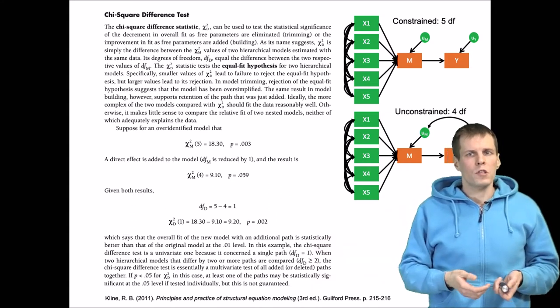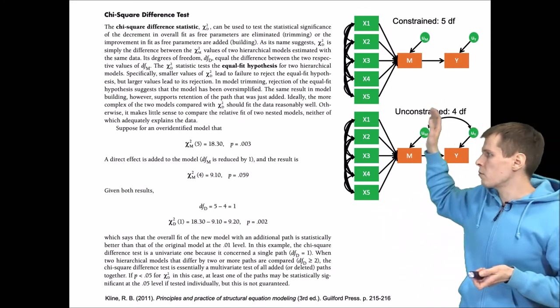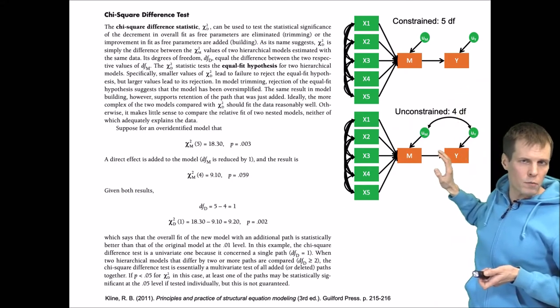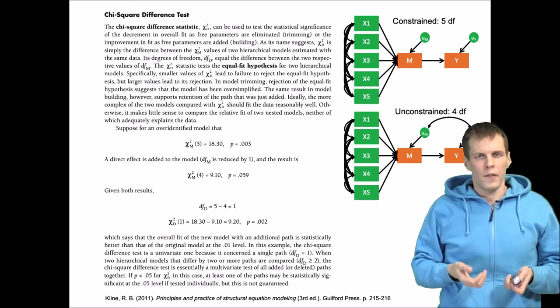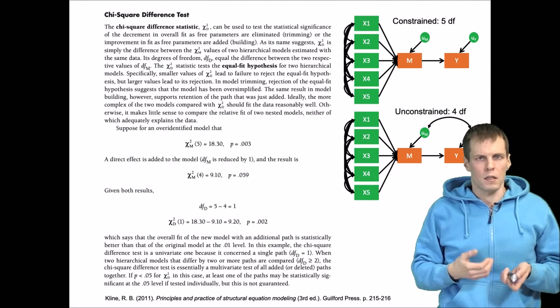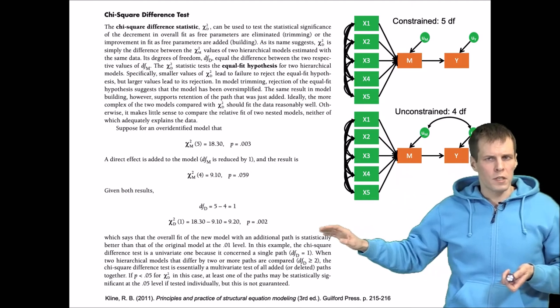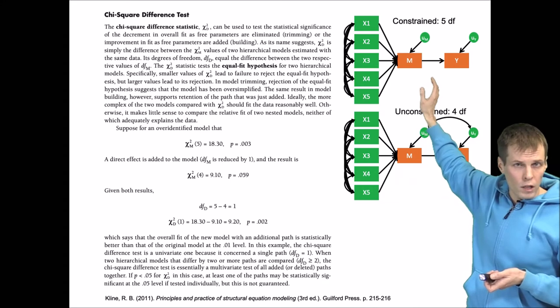What's being tested here is that the constrained model is not substantially worse than the unconstrained model. The null hypothesis is that these models fit equally well, and the only reason why there's a difference in the chi-square statistical model fit is due to sampling error. In this case, the test would say that this is the right proper model and this is an incorrect model that we should not use.